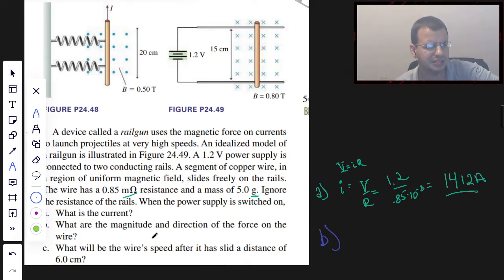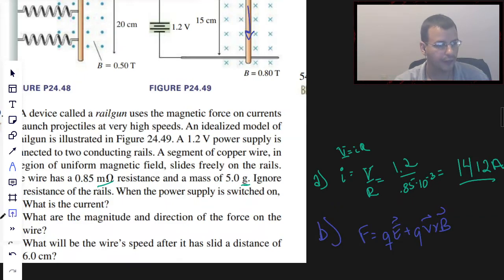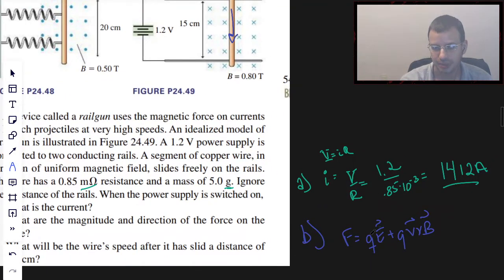What are the magnitude and direction of the force on the wire? So current comes down this way. I'm going to use force equals QE plus QV cross B. This is the force on a particle, a charged particle. So we don't see anything about an electric field, so we're going to assume that's zero.